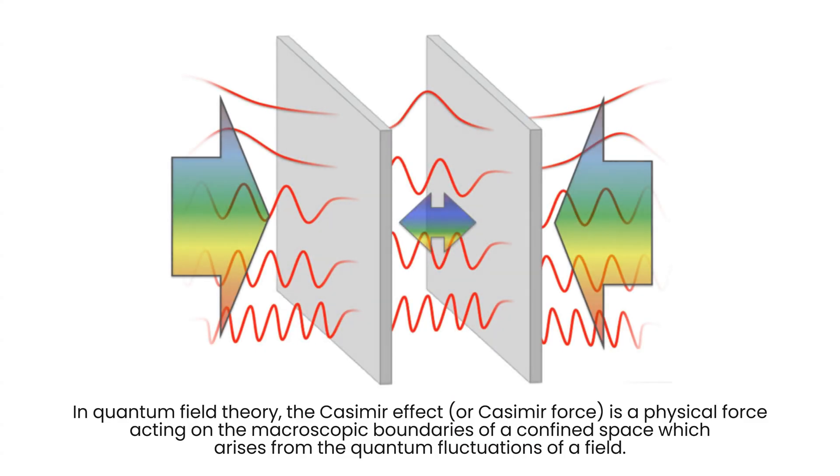One of the most notable manifestations of quantum fluctuation is the Casimir effect, predicted by Dutch physicist Hendrik Casimir in 1948. The Casimir effect arises from the attractive force between two closely spaced parallel conducting plates in a vacuum.